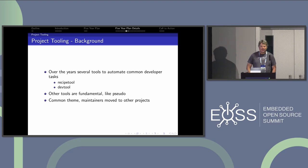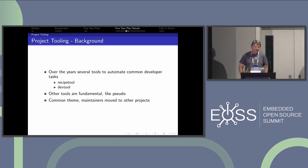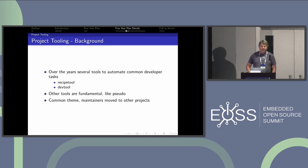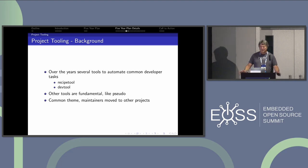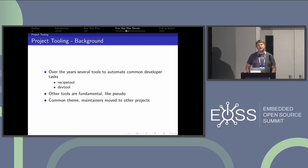We have project tooling — tasks designed to make things easier — like RecipeTool and DevTool. We've got fundamental tools like Pseudo that help us build file systems not as root. The theme here is that people work on these and then move to other projects, leaving them on life support. I've used RecipeTool quite a bit — I ran it against PyTorch and actually managed to get 90% of a recipe working, though it detects licenses poorly and doesn't understand some of the newer build systems.